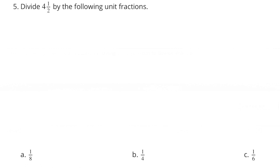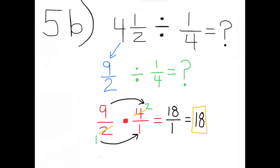B: one-fourth. Four and a half divided by one-fourth — four and a half is the same as nine-halves. Nine-halves divided by one-fourth equals nine-halves times four over one, which equals eighteen over one, or eighteen. There are eighteen groups of one-fourth in four and a half.